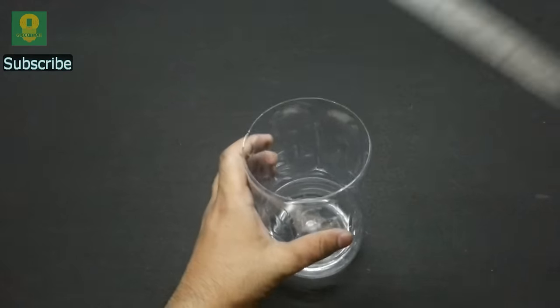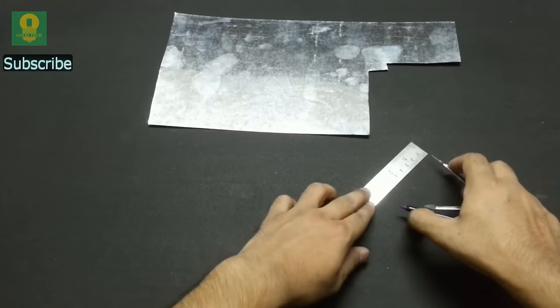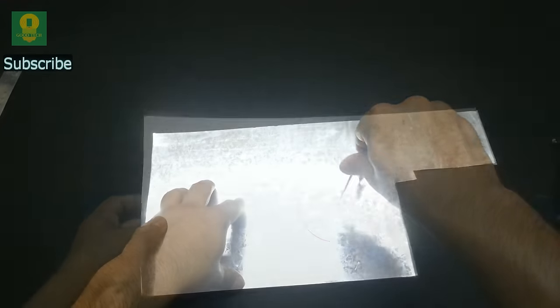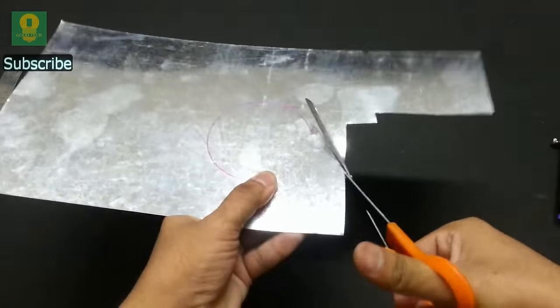Now, measure the approximate diameter of the large bottle. Draw a circle equal to the diameter of the bottle on a metal sheet. Cut the circle using metal cutting scissors.